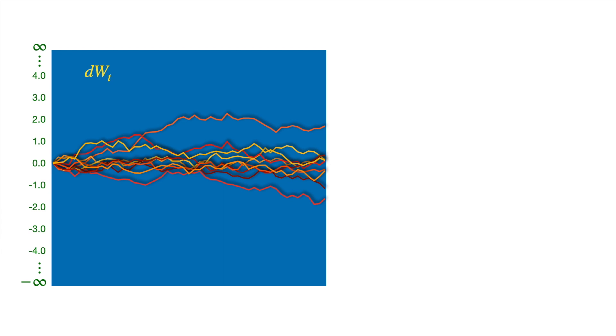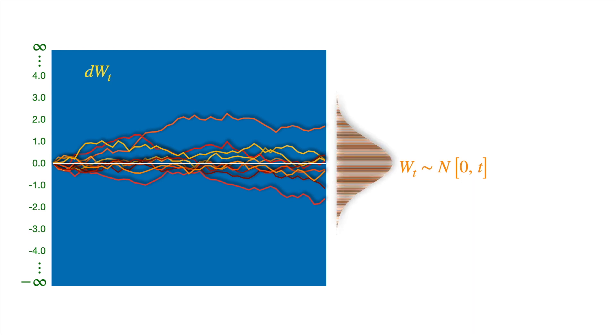Let's say we are only interested in the events that happen at maturity. We know the terminal values of these paths will have mean of zero, so let's draw this reference line. And we know the terminal values are normally distributed around this mean of zero, with variance equal to the length of the time interval — this is the familiar bell-shaped curve. And we also know the familiar density function.